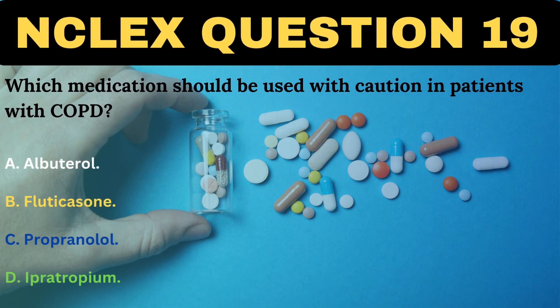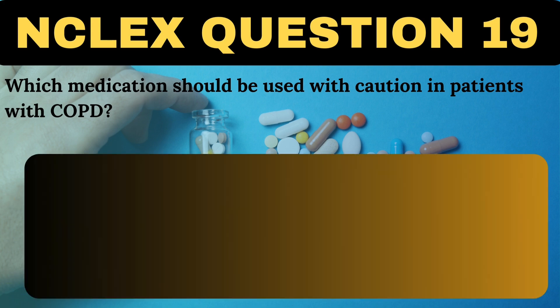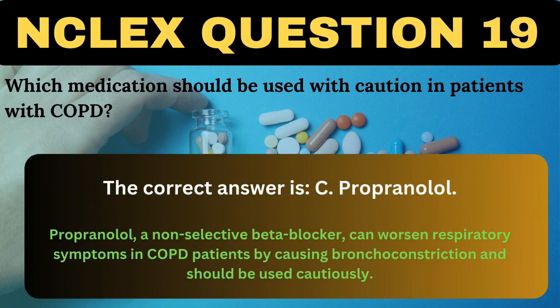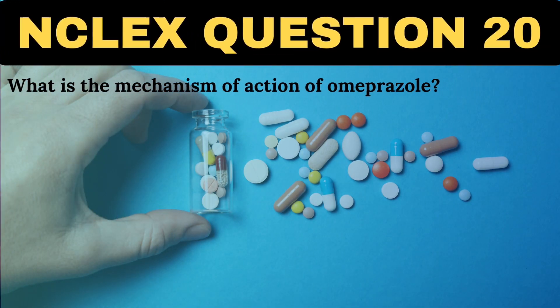Which medication should be used with caution in patients with COPD? A. Albuterol. B. Fluticasone. C. Propranolol. D. Ipratropium. The correct answer is C, Propranolol. Propranolol, a non-selective beta-blocker, can worsen respiratory symptoms in COPD patients by causing bronchoconstriction and should be used cautiously.